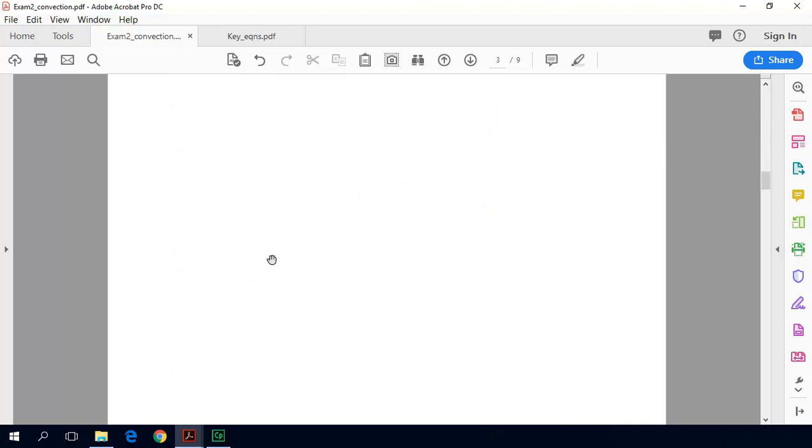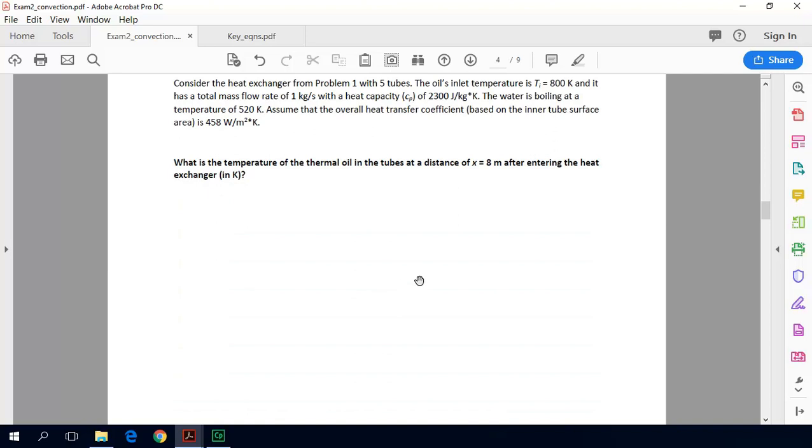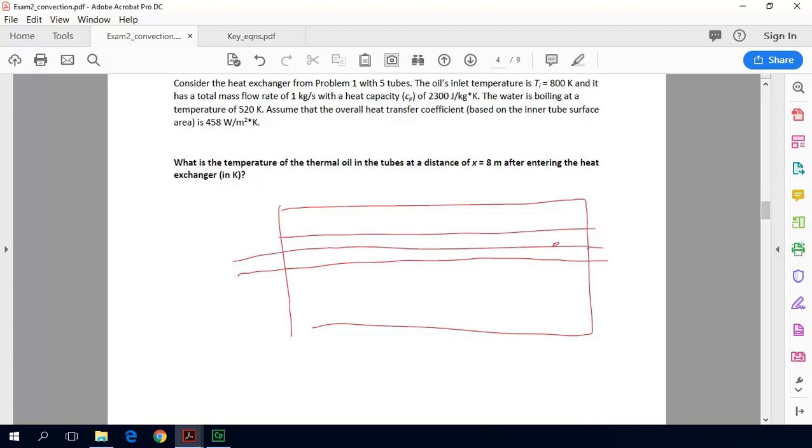So scroll back down to our problem. I'll draw a side view of the heat exchanger now. So we have boiling water here. We have these tubes. I'll just draw a single tube passing through. So we're going to have our hot thermal oil coming in at 800 Kelvin. I'm going to call that Ti, or T at the inlet. We have this water boiling. I'm going to call that Tb.